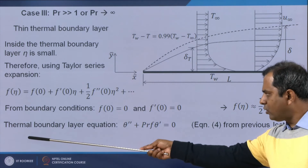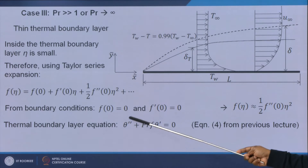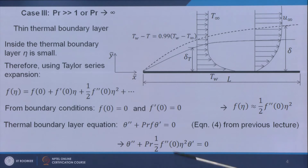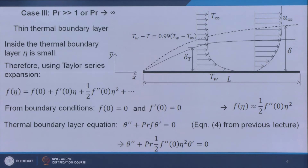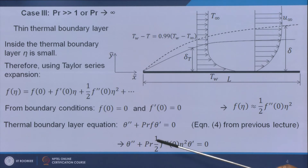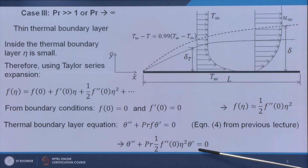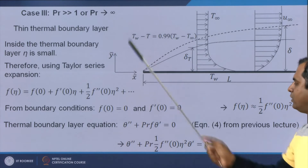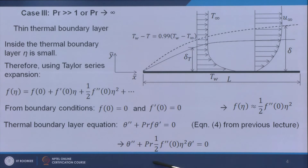Inside the thermal boundary layer, the governing equation is θ'' + Pr·f·θ' = 0, already derived in the last lecture. Here f can be replaced by ½f''η² from the velocity boundary layer scale analysis. So the equation becomes θ'' + Pr·(½f''η²)·θ' = 0, which is very important for Pr >> 1.